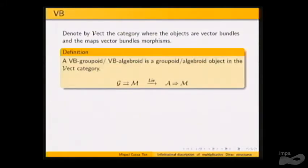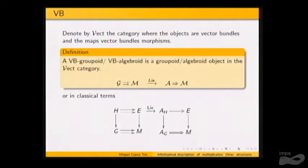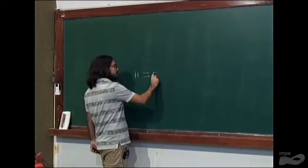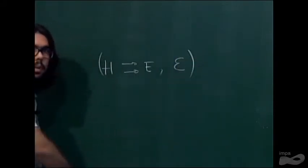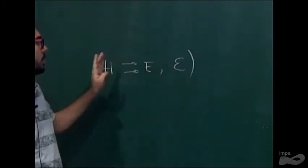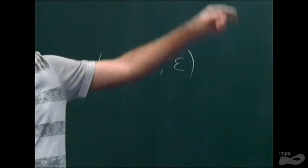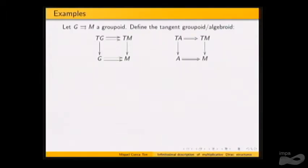For that, we need what is a VB groupoid, which was already defined in the previous talk. A VB groupoid, or VB algebroid, is just a Lie groupoid or Lie algebroid in the category of vector bundles. We can think of them as squares where one side is a vector bundle and the other is a groupoid. The main examples are the tangent groupoid: given a groupoid, we apply the tangent functor to all structural maps and get another groupoid. The Lie algebroid of the VB groupoid is just the tangent algebroid.